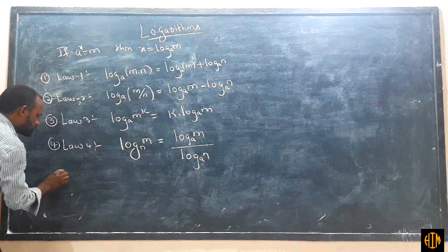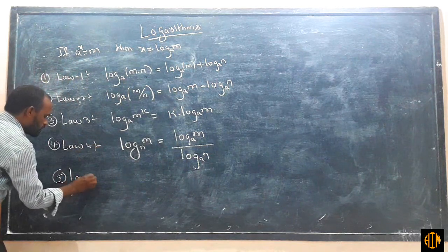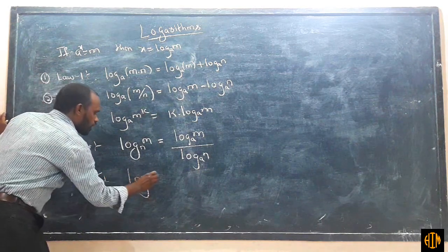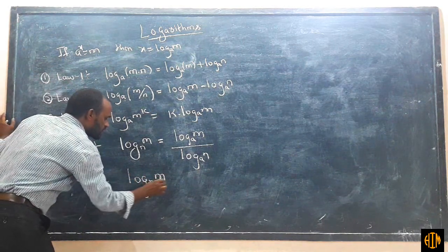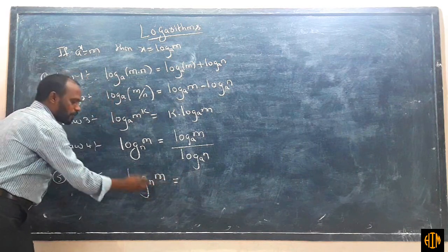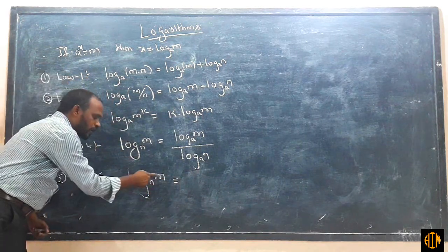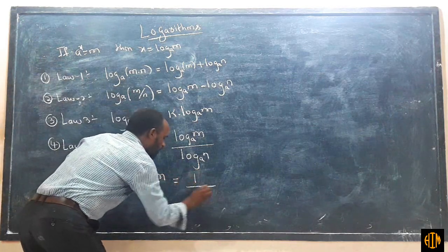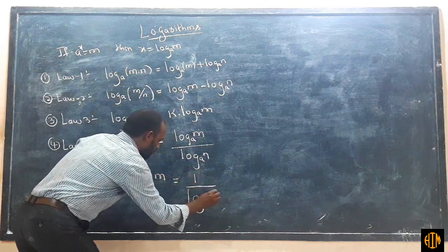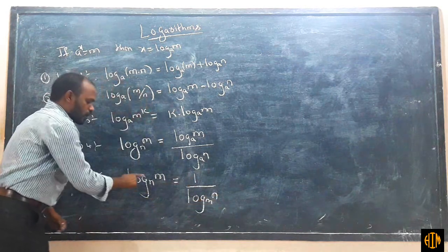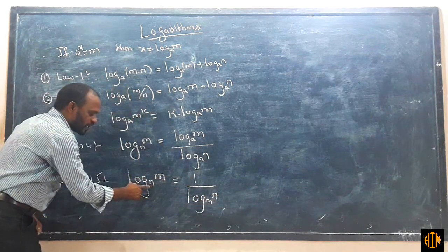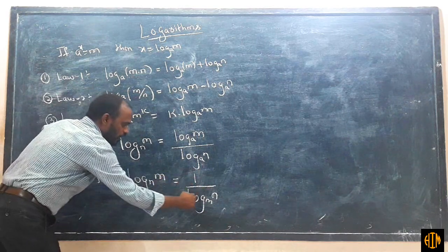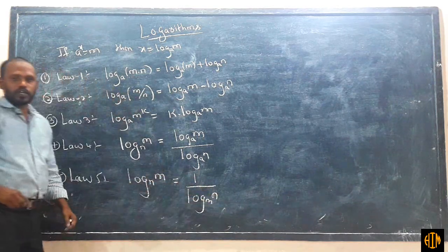Fifth law: log m base n equals one divided by log n base m.